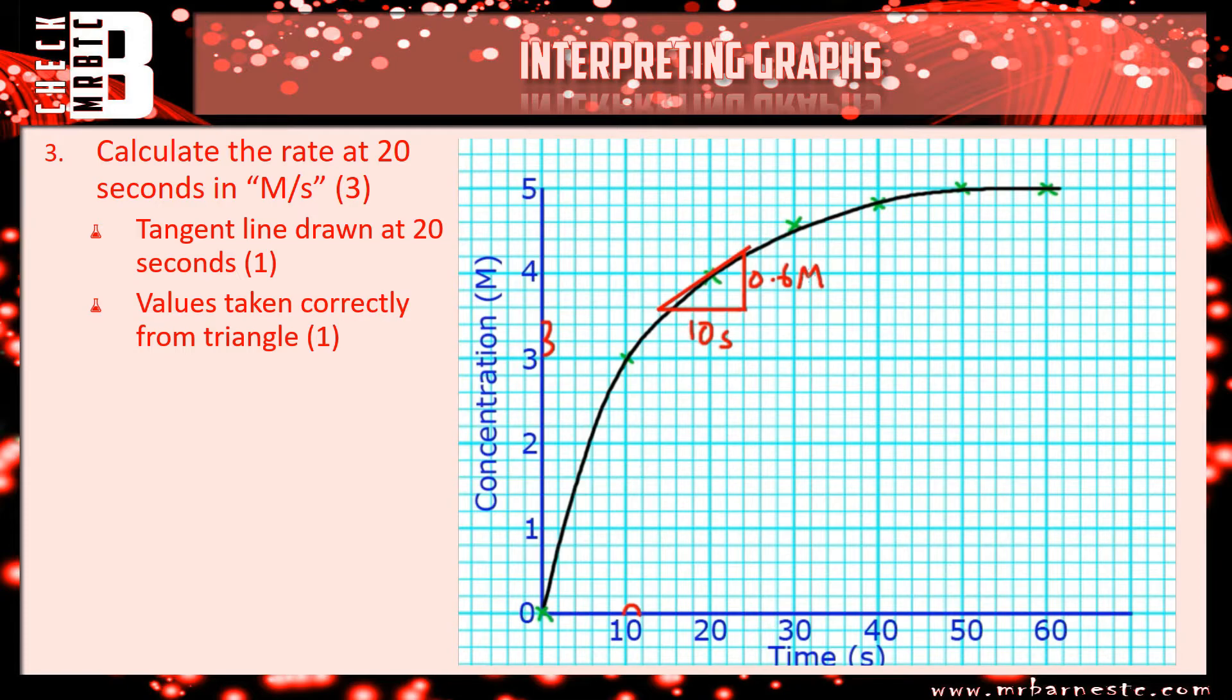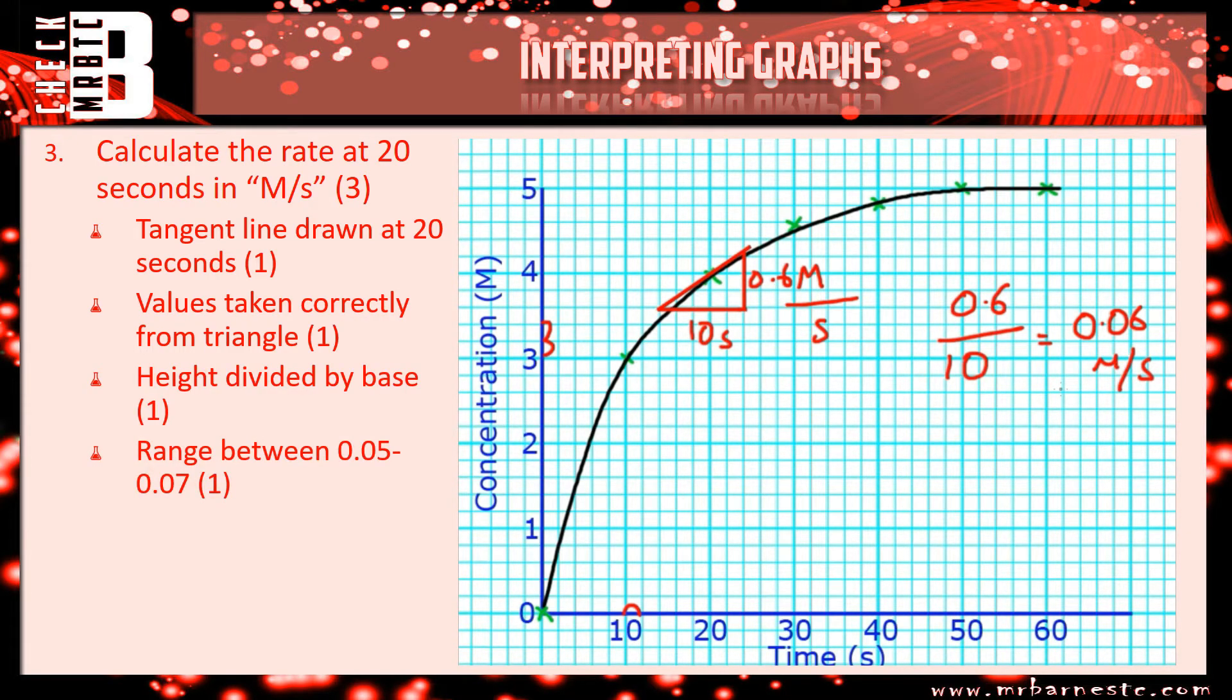Now, to work out the rate, which is molar per second, that should give you a clue. So, it's moles per second. So, it's going to be 0.6 divided by 10, which is going to give me 0.06 molar per second. So, you will get one mark for having your tangent line drawn correctly, one mark for picking out information correctly, and one mark for having approximately 0.06 molar per second.